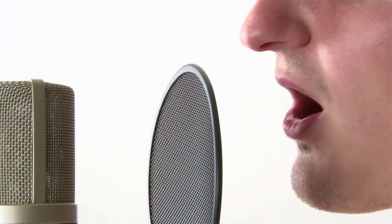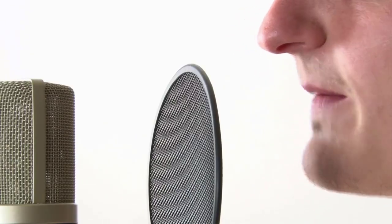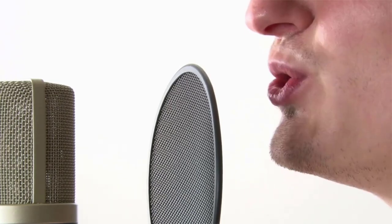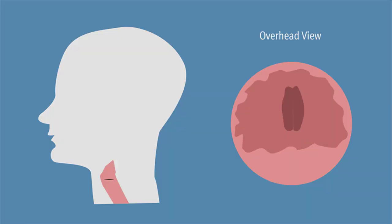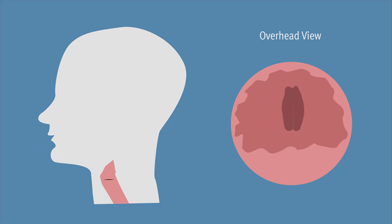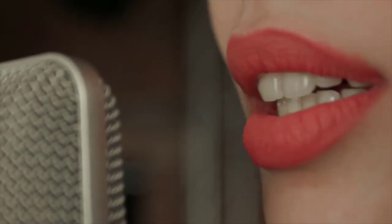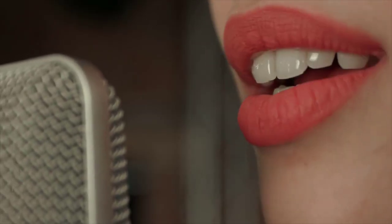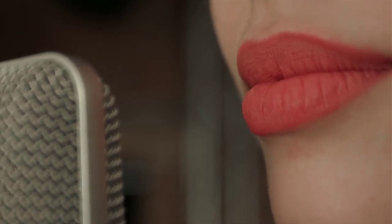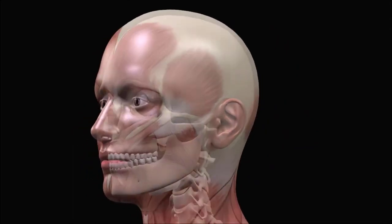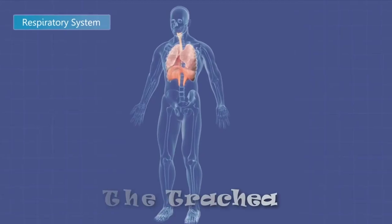Air forced between the adducted vocal cords produces a high-pitched sound when the cords are relatively taut and a lower-pitched sound when they are more slack. In adult males, the vocal cords are usually longer and thicker and vibrate more slowly, producing lower-pitched sounds than in females. Loudness is determined by the force of the air passing between the vocal cords. Although the vocal cords alone produce sound, they don't produce intelligible speech. The crude sounds from the larynx are formed into words by the actions of the pharynx, oral cavity, tongue, and lips.